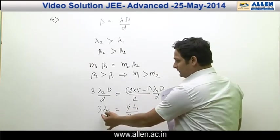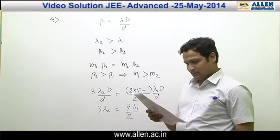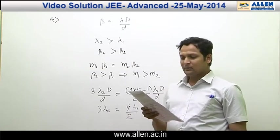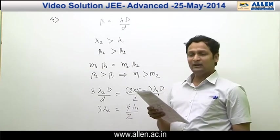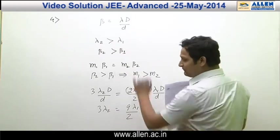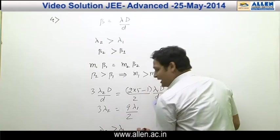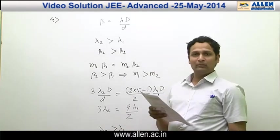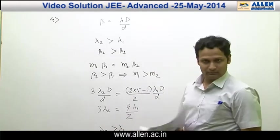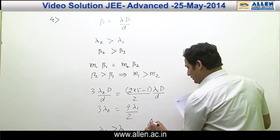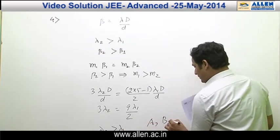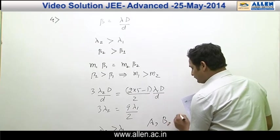By putting the value, left hand side is equal to right hand side. And option D: the angular separation of fringes of lambda 1 is greater than lambda 2. No, because lambda 2 is greater than lambda 1. Since lambda 2 is greater than lambda 1, hence angular separation corresponding to lambda 2 will be greater than lambda 1. Hence, the options will be A, B and C.